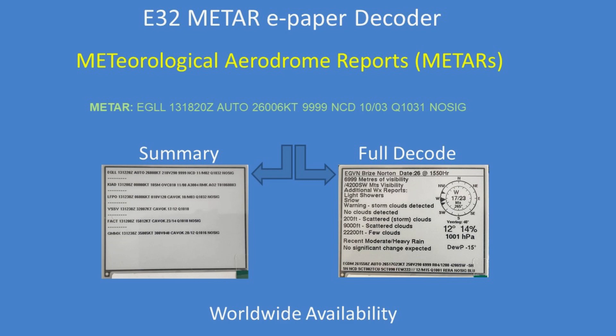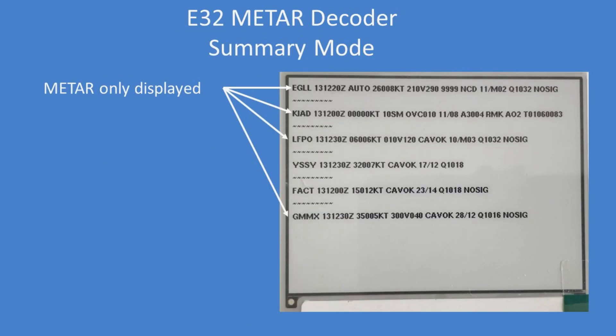You can use it to decode the METAR using a summary or a full decode format. There is the summary mode showing six METARs that have been received — if you can decode them all yourself, well and good, but obviously the software will do it for you. That's one mode.